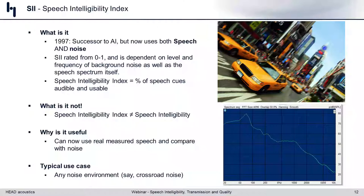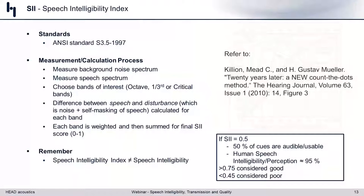If you score something like 50% SII, it actually means you get a much higher human perception of speech. Why does this algorithm matter? Because you can now use your own real speech to compare in the algorithm, not just some standardized speech. You can find details in ANSI S3.5 from 1997. The procedure: measure your background noise spectrum, then in a separate quiet room measure your speech spectrum. Once you have clean speech and noise, you choose which bands are of interest — octave bands, third-octave bands, or critical bands.